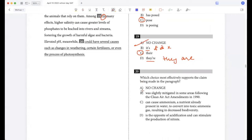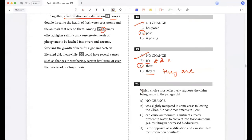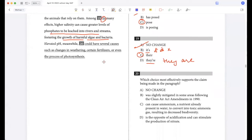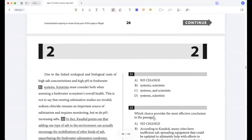Elevated pH - pH meanwhile could have several causes such as changes in weathering, certain fertilizers, or even the process of photosynthesis. Which choice most effectively supports the claim being made? So I'm saying they pose a double threat. Higher salinity can cause greater level of phosphates, forcing the growth of harmful algae. Elevated pH - pH meanwhile. So I'm not talking about causes, right? I'm talking about harmful effects, so it can't be A. Was slightly mitigated in some areas following the Clean Air Act amendments. Can cause ammonium, a nutrient already present in water, to convert into toxic ammonia gas, resulting in decreased biodiversity. So this is a directly negative effect. Is the opposite of acidification and can stimulate the production of nitrate. So these two are not talking about negative effects, so C.